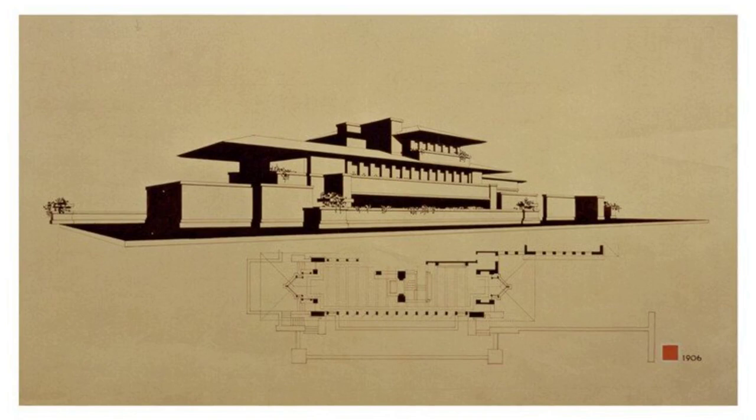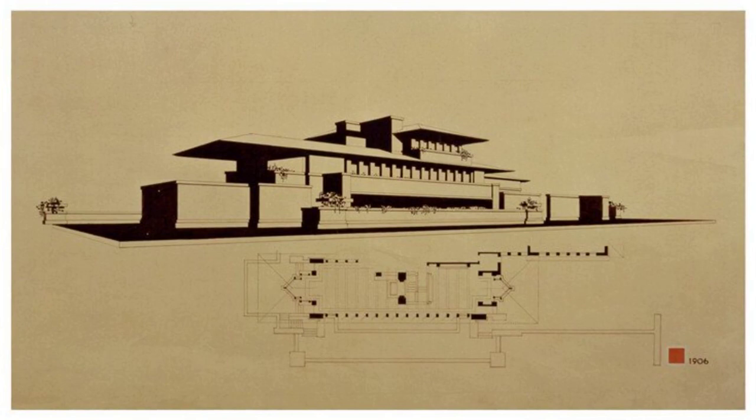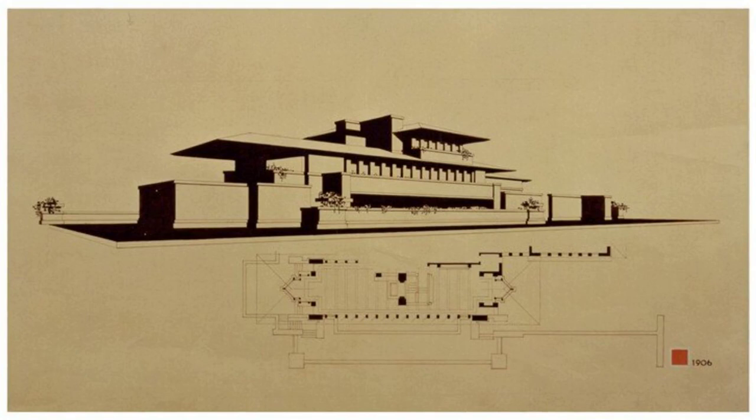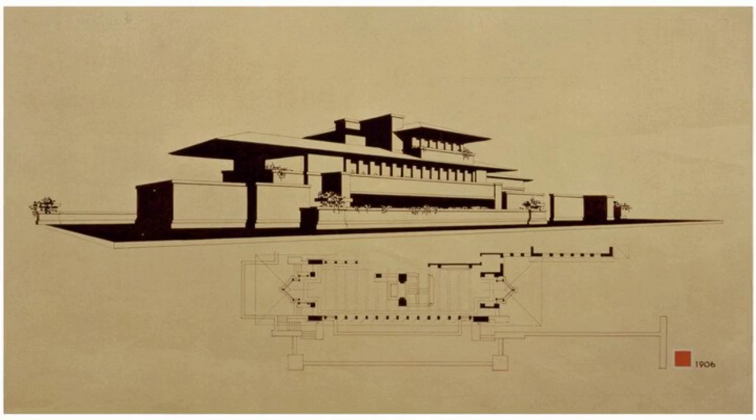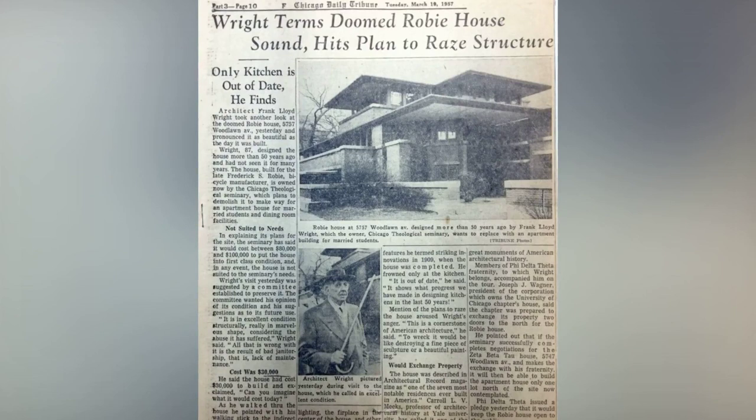The house was influenced by Wright's previous work, including the Ferdinand F. Tomek House in Riverside, Illinois. Construction began in April 1909 and was completed in January 1911, with a total cost of $58,500. However, Robie's financial difficulties and personal issues led him to sell the house after just 14 months of living in it.